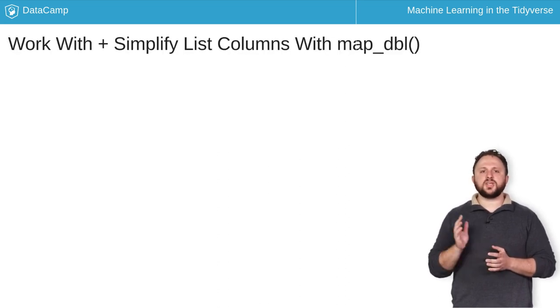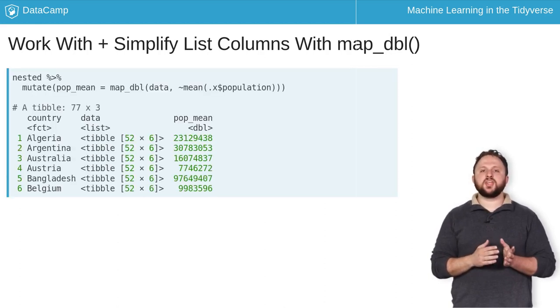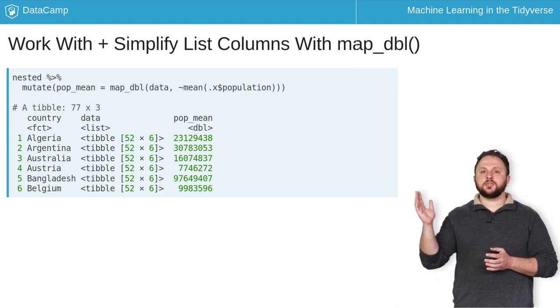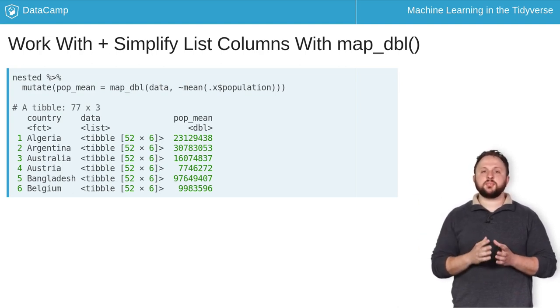For example, the mean function returns a vector of type double. As such, you can use map_double to return a vector of doubles instead of a list of doubles. This can be done like so and, as a result, mutate appends a vector of type double to the data frame instead of a list.